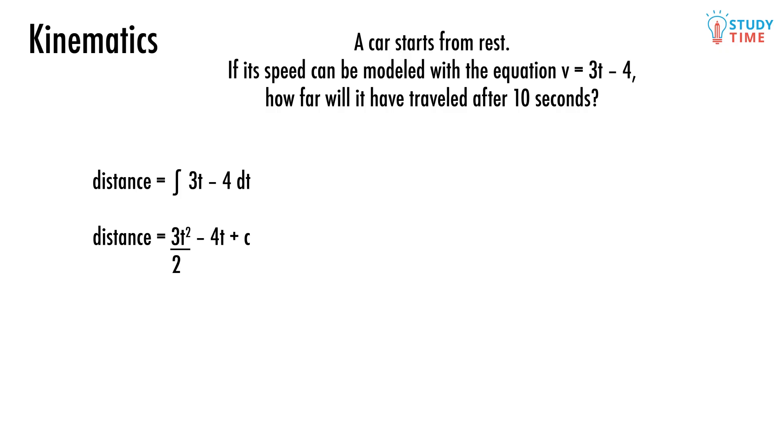Once again, take special care not to forget to add on plus c to your integral. Now before we can figure out what the distance will be after 10 seconds, we need to figure out what c is. The piece of information to focus on here is this: a car starts from rest. The phrase 'from rest' tells us that before the time starts, the car is not moving. This tells us two very important pieces of information. When t equals 0, speed equals 0, and distance equals 0. It's the second piece of information we're focusing on now. We can replace the distance in our equation with a 0 and the t with a 0. If we solve the equation for c, we get 0 equals 3/2 times 0 squared minus 4 times 0 plus c. And so c equals 0.